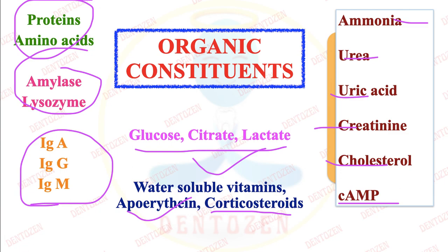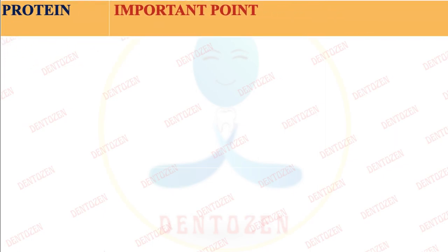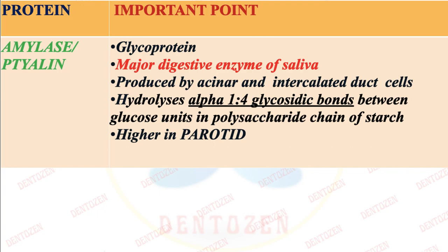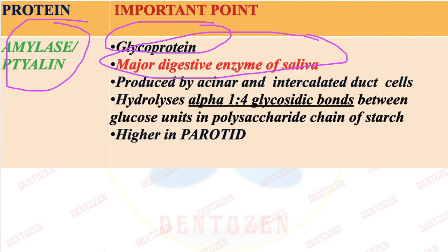The first important protein is amylase, which we also call ptyalin. Amylase is a glycoprotein — a carbohydrate and protein mixture — and is the major digestive enzyme in saliva. It helps in digestion of carbohydrates, specifically in starch and polysaccharide chains. It hydrolyzes alpha-1,4-glycosidic bonds. It comes from acinar cells and intercalated duct cells and is higher in parotid saliva.